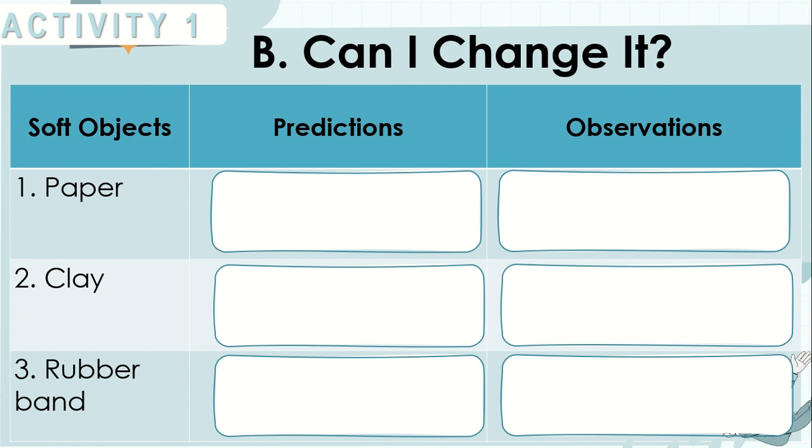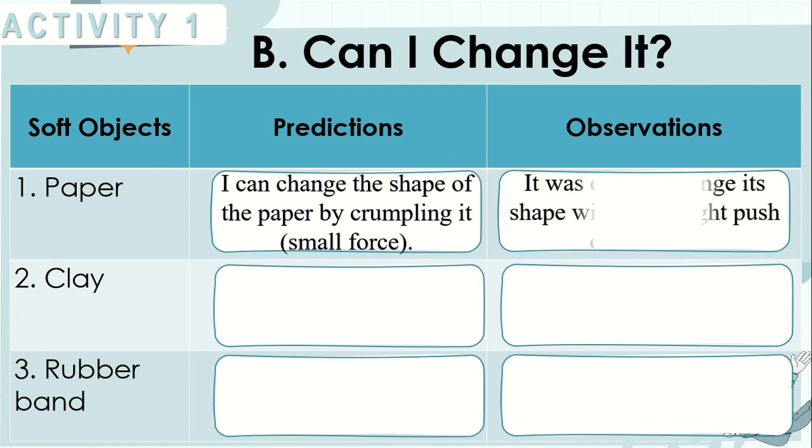Here are the answers. For the paper, I can change the shape of the paper by crumpling it, a small force. It was easy to change its shape with just a light push or scrunch.